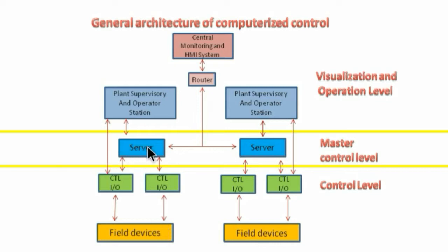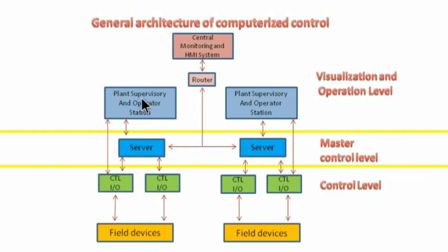A number of servers at this level with different functions are connected to the controllers for configuration and diagnostics purposes. The OPC server will pass the data through the network router to the HMI system for remote monitoring. The operator station located at the plant is used by the operator to control the process.